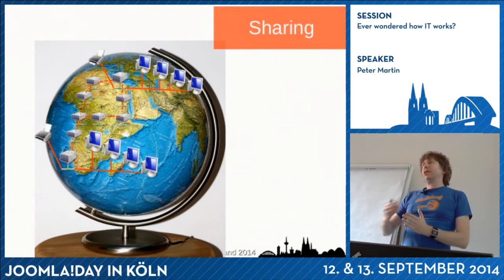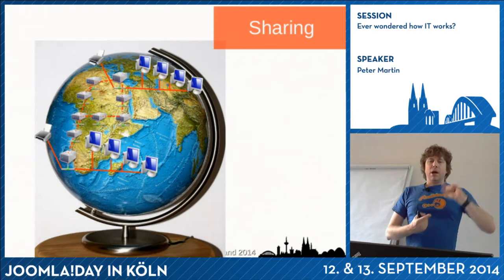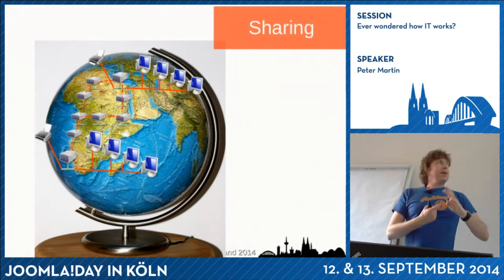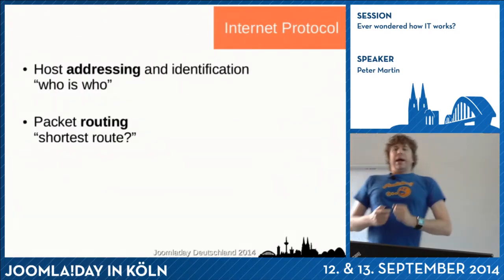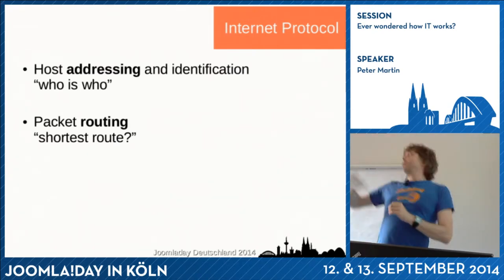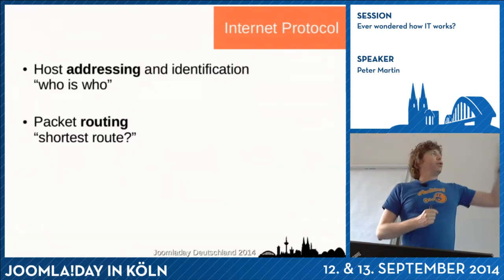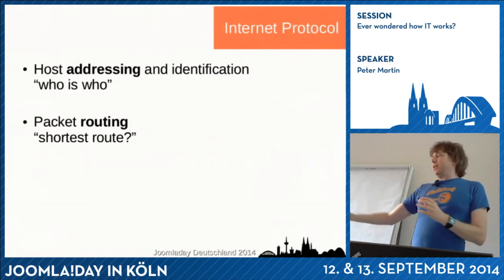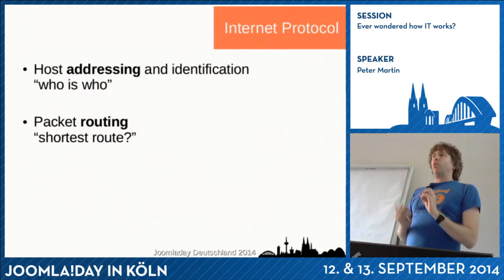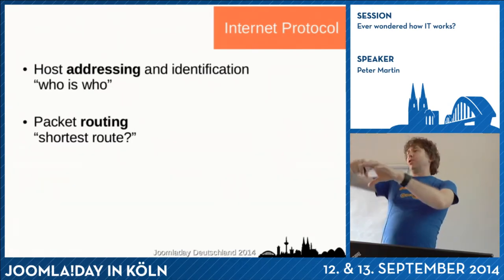Sharing and sending in packets gives three different problems: how do you know where to travel to? Which route do you take? And how do you know if a packet arrives safely? The internet protocol is about addressing — where to go — and about routing, which is the shortest route. Every router in the internet has a routing table and knows which way is the shortest route to some other place, so it passes the packet to another router closer to the destination.